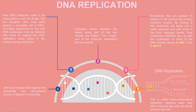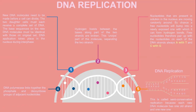Always A pairs with T, and C pairs with G. DNA polymerase links together the phosphate and deoxyribose groups of adjacent nucleotides. This is called semi-conservative replication because each new DNA molecule has one original strand and one new strand.